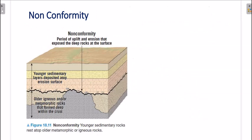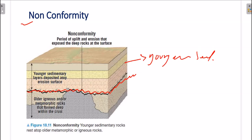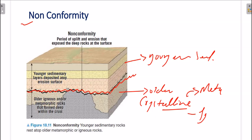The fourth type is nonconformity. Nonconformity occurs when younger sedimentary rocks rest above older crystalline rocks. Crystalline rocks here means metamorphic or igneous rocks. So when the rock below the unconformity is metamorphic or igneous and the rock above is sedimentary, that type of unconformity is known as nonconformity.